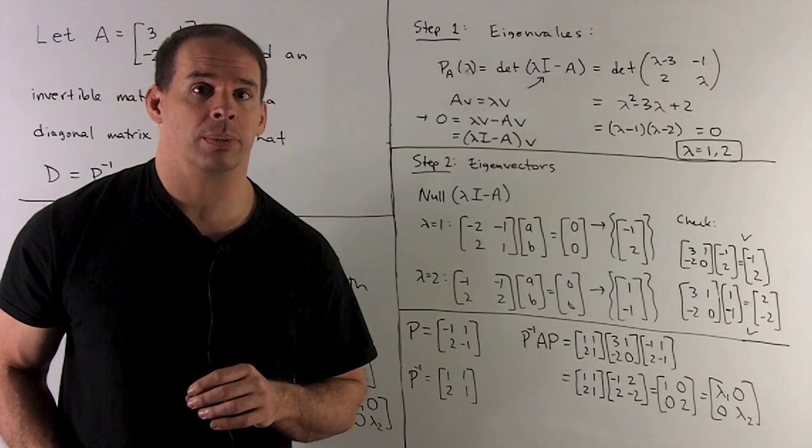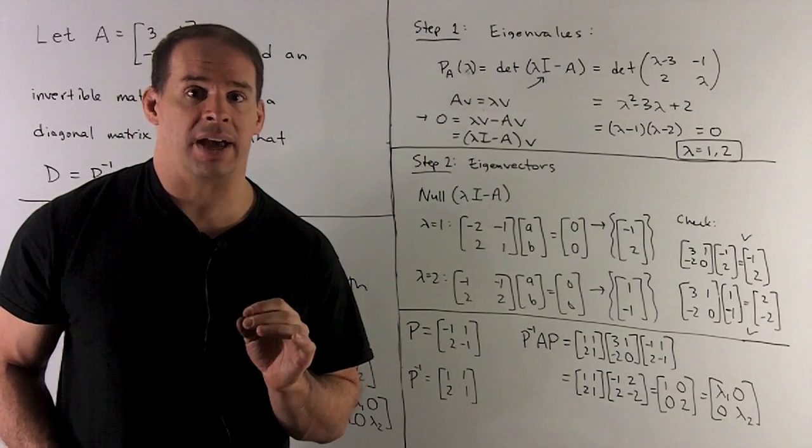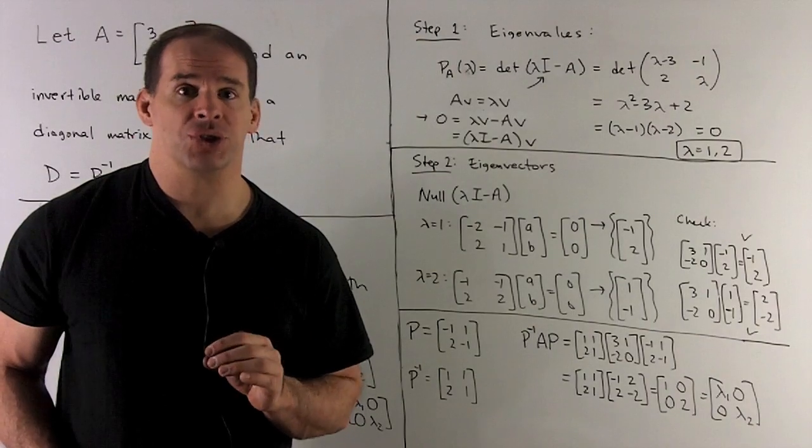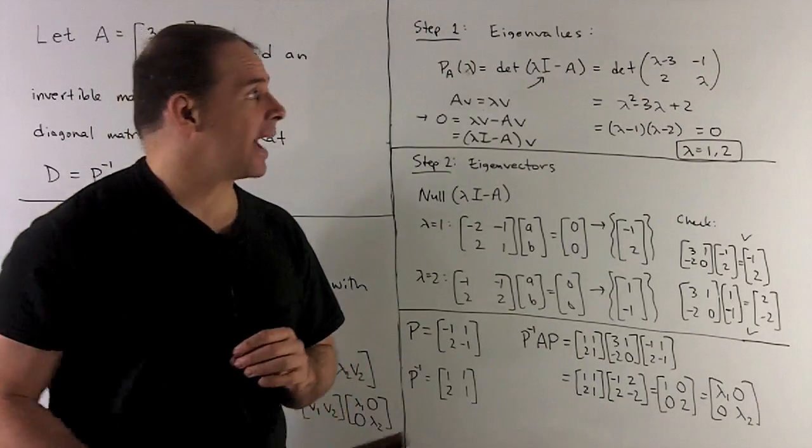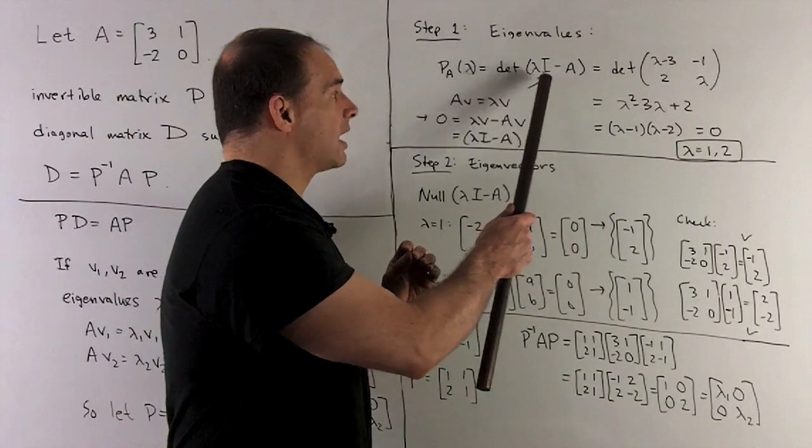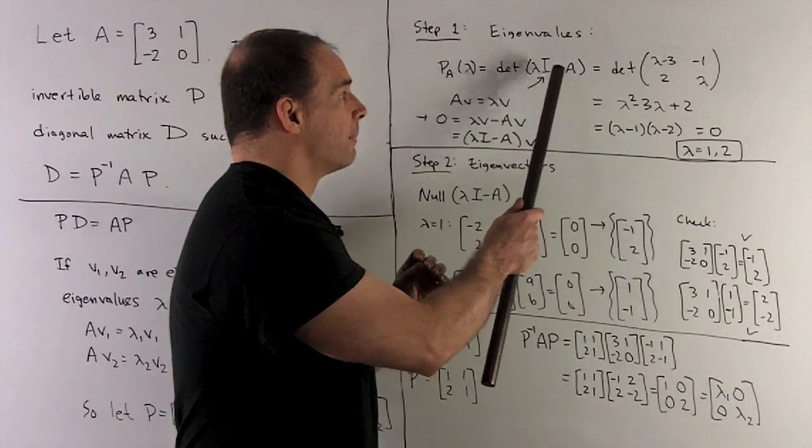To finish, we push the numbers through. First, the eigenvalues. The eigenvalues are just going to be the zeros of the characteristic polynomial. That's given by determinant, lambda times I, the identity matrix, minus A.